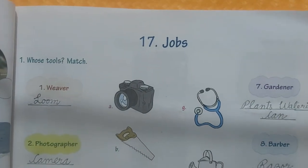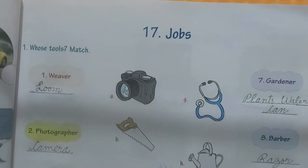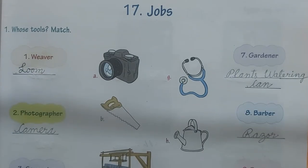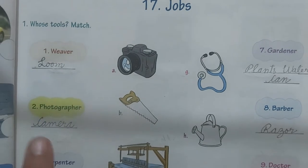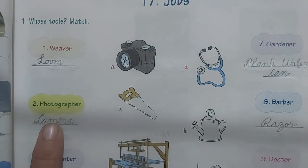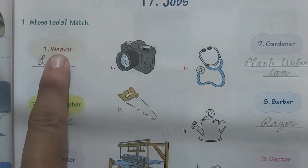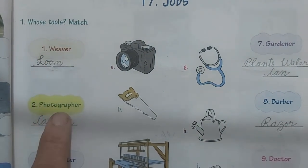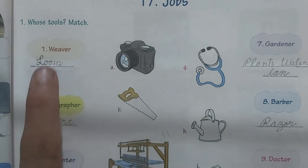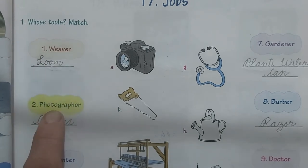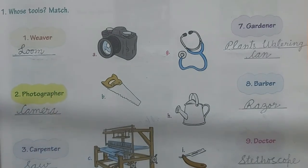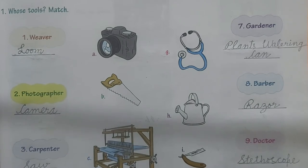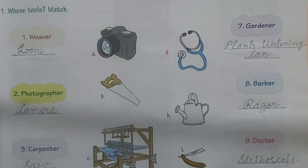So children, I have explained all the tools to you. You will write these words with the help of pencil under the given words — weaver, photographer. You have to write these words. Do matching also, children. You will do matching and I am doing matching for you right now.